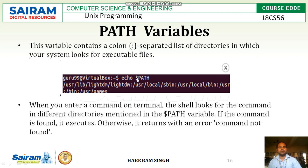The next topic is the PATH variable. This variable contains a colon-separated list of directories in which your system looks for executable files. If you type 'echo $PATH', it will display a list of paths separated by colons, such as /usr/lib/lightdm, /usr/local/sbin, and so on. It contains a list of paths where different commands can be present, so when you enter a command on the terminal the system searches through these directories.